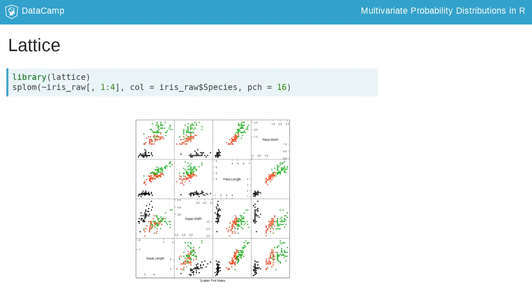Now we will draw a similar plot for all four variables with the splom function. Using the formula interface, the first argument specifies the variable you want to plot. The second argument colors the point according to the species and the third argument pch changes the symbol type. There is an entire DataCamp course on data visualization in R with lattice, which will help you learn more about the full potential of the lattice package.